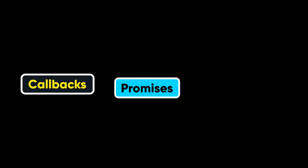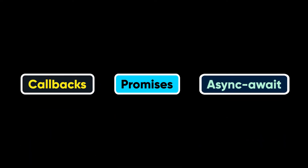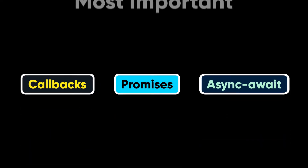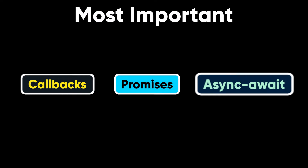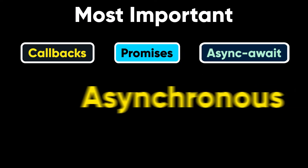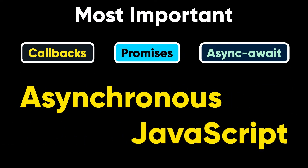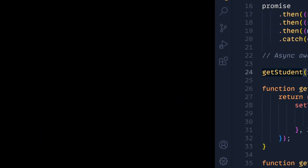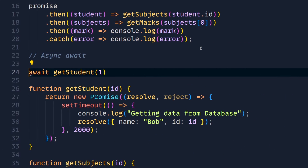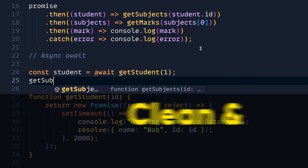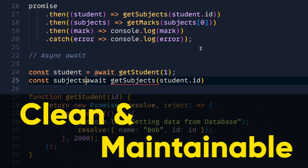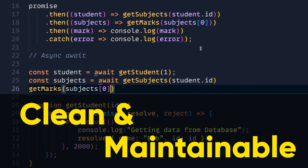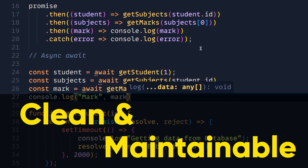Let's learn about callbacks, promises, and async/await, which are the most important concepts in asynchronous JavaScript. After completing this tutorial, you will be able to write clean and maintainable asynchronous code in an easy way.